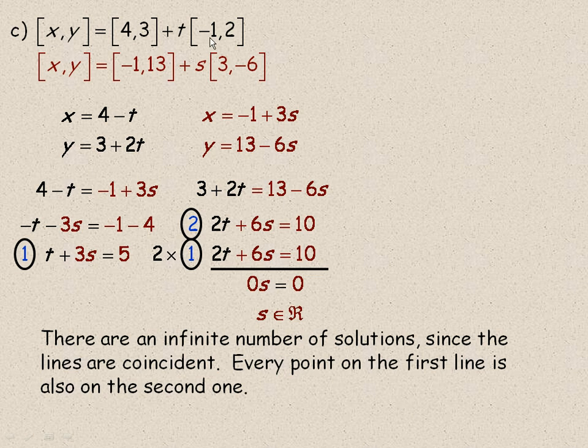And if you look at the direction vectors, you might have guessed that. Negative 1, 2 is, 3, negative 6 is a multiple. Because if I multiply this by negative 3, I get this direction vector. So the direction vectors are multiple, so the lines are at least parallel. And of course we could have checked to see if 4, 3 was on this line, or negative 1, 13 was on that line, and we would have found that they are. And that means that the lines would be coincident.